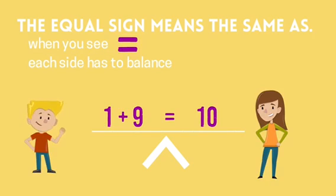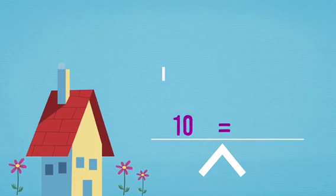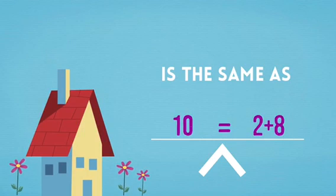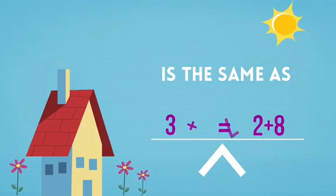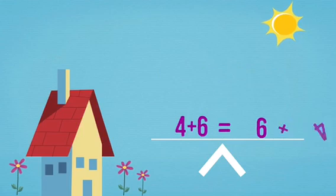One and nine equals ten. Ten is the same as two plus eight. Three plus seven is the same as seven and three. Four plus six is the same as six plus four.